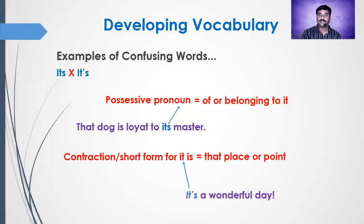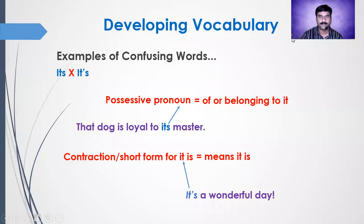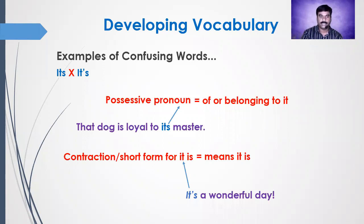So 'it's a wonderful day' means 'it is a wonderful day'. Friends, by this time you might have understood the difference between 'its' without apostrophe and 'it's' with apostrophe. 'It's' with apostrophe means 'it is'.